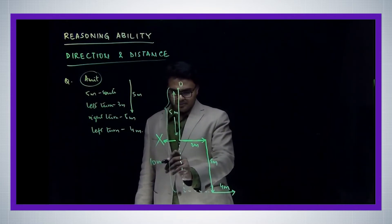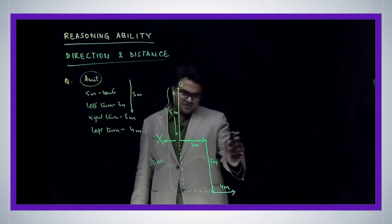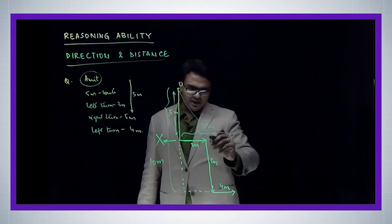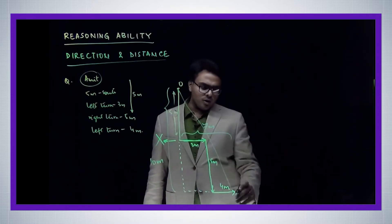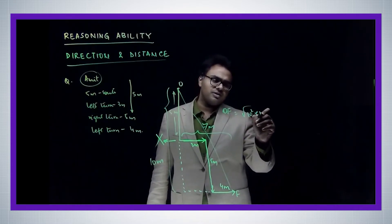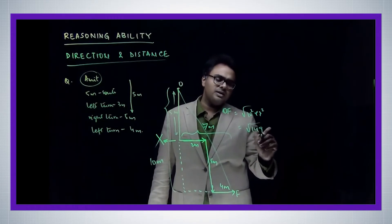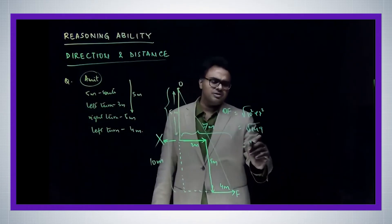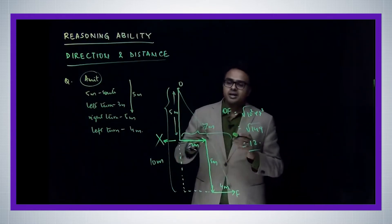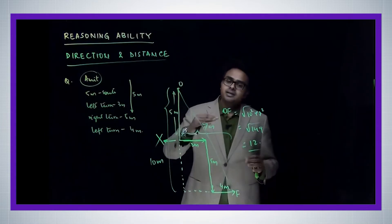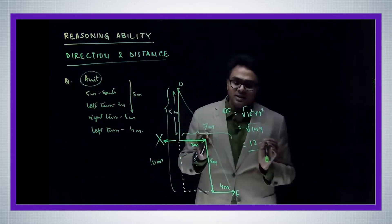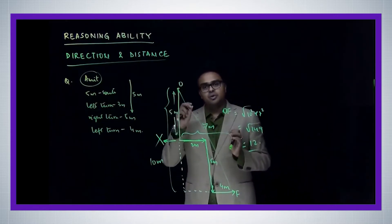Now we calculate the distance from the original point. The total vertical distance is five plus five, which is ten meters. The total horizontal distance is three plus four, which is seven meters. So the distance OF from origin O to final point F is the square root of 10² + 7², that is the square root of 149, which comes to approximately 12-point-something meters. The key takeaway is understanding left and right turns relative to the walking individual.